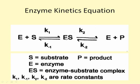The ES complex forms through interaction between the enzyme and substrate. It is a reversible reaction with forward and reverse rate constants k1 and k-minus-1. The ES complex then breaks down — it is assumed that the ES complex breaks down to E plus P — an irreversible reaction with k2 as the forward rate constant and k-minus-2 as the reverse rate constant.